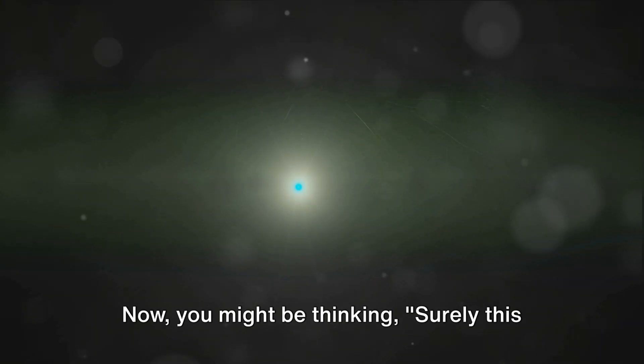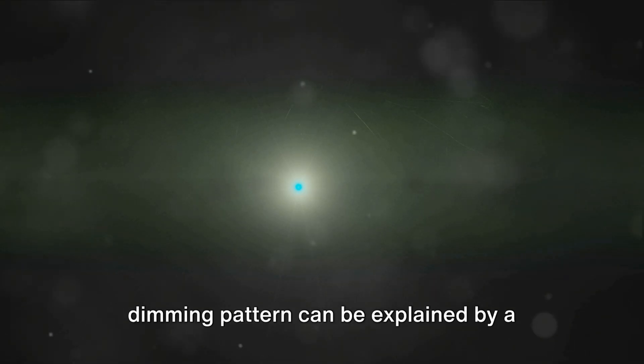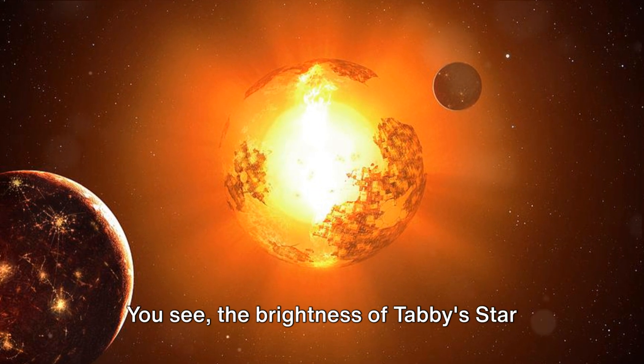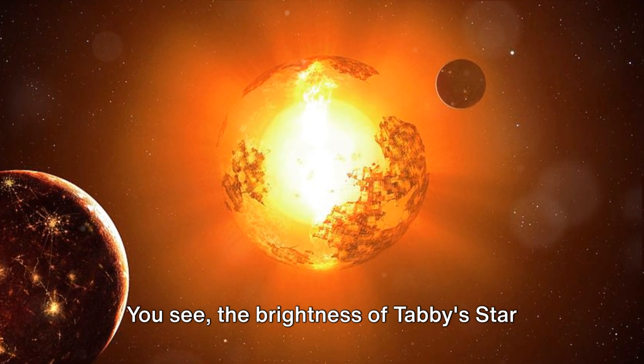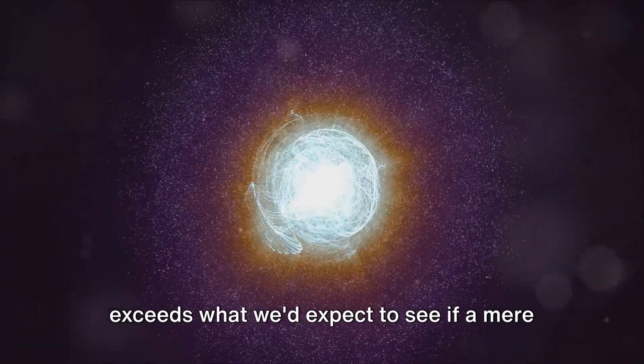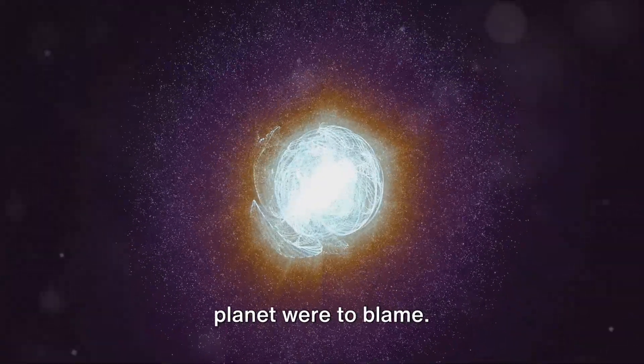Now you might be thinking, surely this dimming pattern can be explained by a planet passing in front of the star, right? Well, not quite. You see, the brightness of Tabby's star has been observed to drop by as much as 22%, a figure that far exceeds what we'd expect to see if a mere planet were to blame.